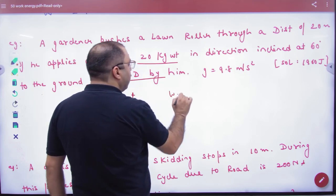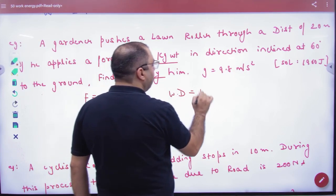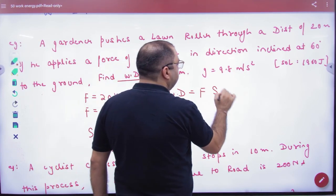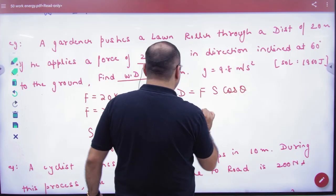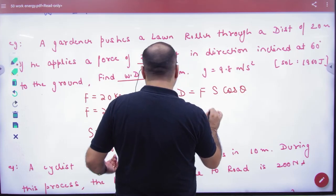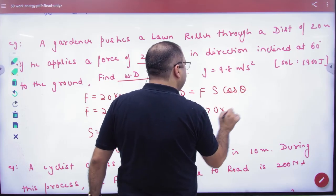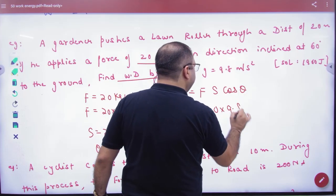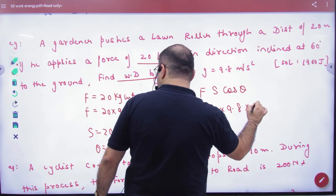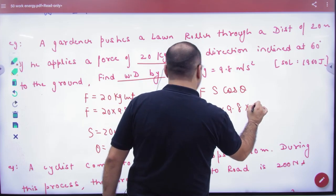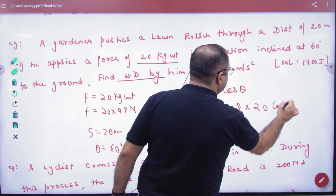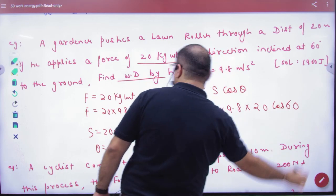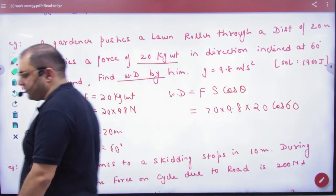Work done. Write the formula of work done: W = F · S · cos θ. So F is 20 into 9.8, S is 20, and theta is 60 degrees. Solve the answer.